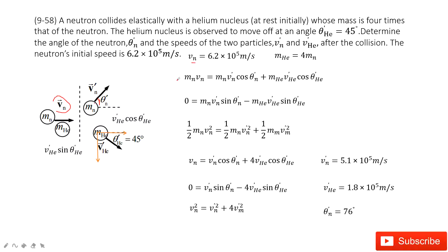So first, we look at the x-component. Initially, we have Mn Vn. This is the initial momentum, equal to final momentum. It is just Mn Vn plus.